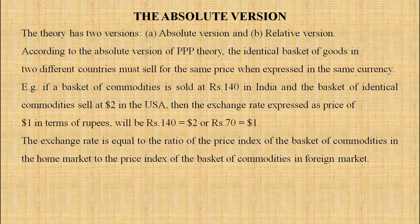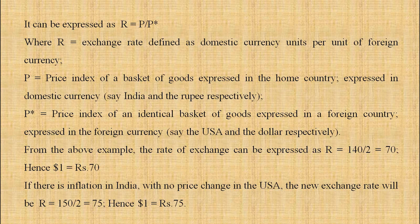For example, if a basket of commodities is sold at Rs. 140 in India, and the identical basket sells at $2 in the USA, then the exchange rate expressed as the price of rupees in terms of dollars will be: Rs. 140 = $2, so Rs. 70 = $1. The exchange rate equals the ratio of the price index of the basket of commodities in the home market to the price index in the foreign market.